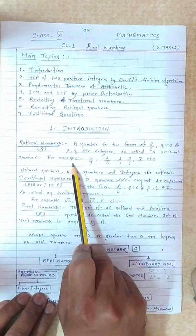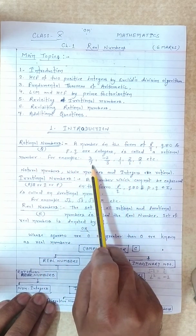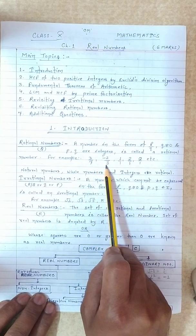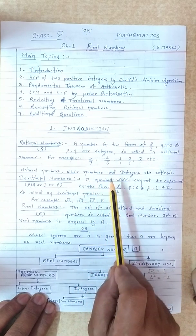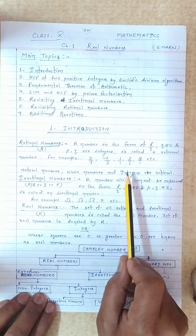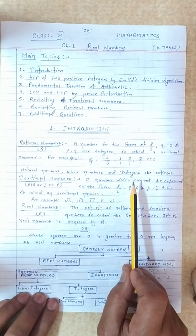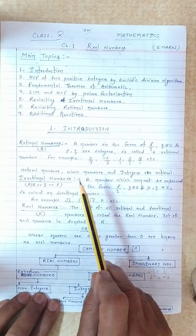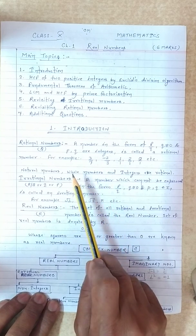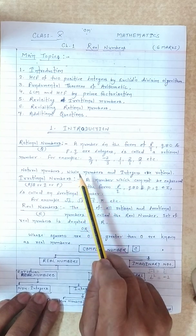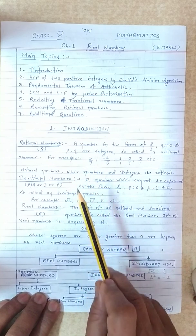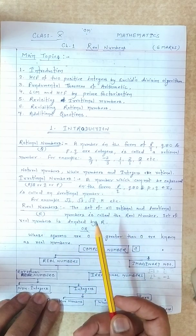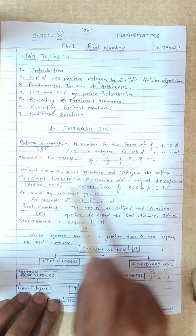For example: 3 upon 7, minus 2 upon 3, 1, 2, 0. This means any number which we can express in the form p upon q — all such numbers are rational numbers.